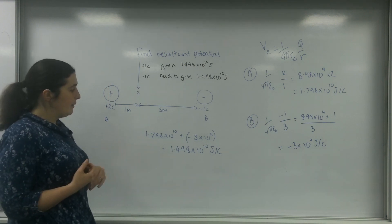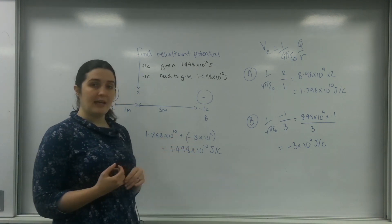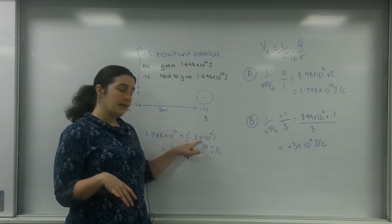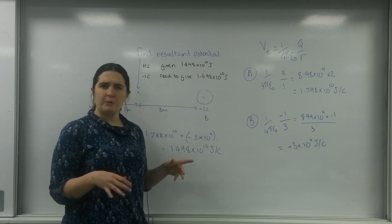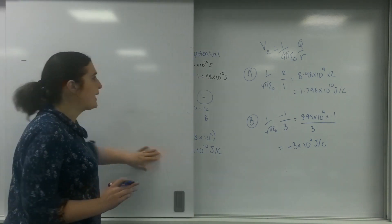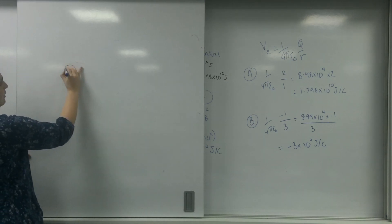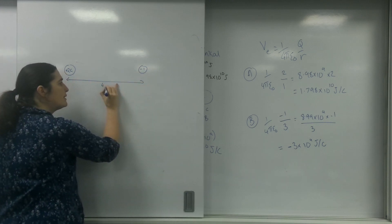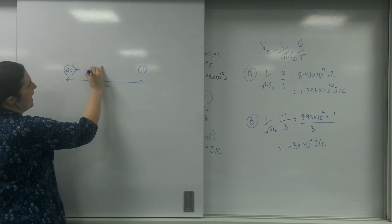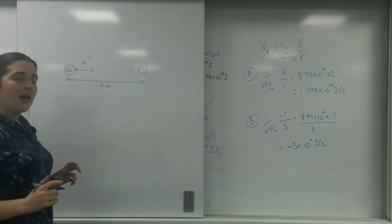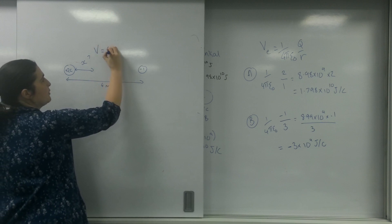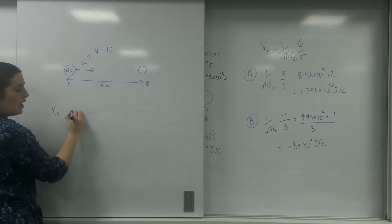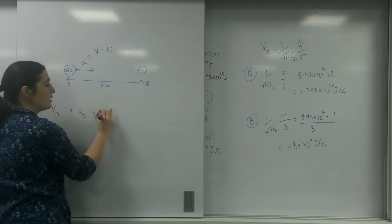Now, looking at this setup with a positive and a negative charge, there must theoretically be a point where adding the two potentials equals zero. Let's see if we can find it. I have my positive 2 coulomb and my negative 1 coulomb charges, 4 metres apart, and I'm going to find position X where the potential equals zero. Calling the charges A and B, the potential from A plus the potential from B equals zero.